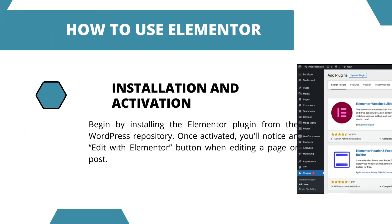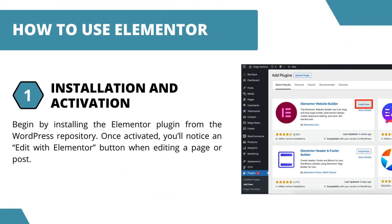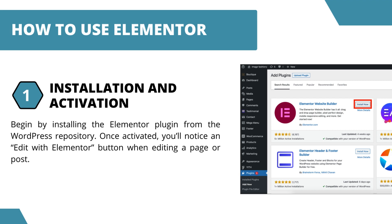How to use Elementor? 1. Installation and Activation: Begin by installing the Elementor plugin from the WordPress repository. Once activated, you'll notice an 'Edit with Elementor' button when editing a page or post.